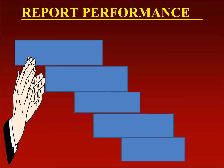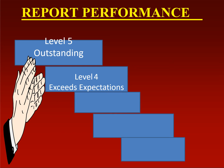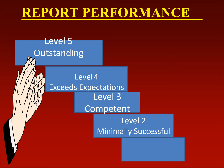The final product of the performance appraisal process is the performance evaluation report. It falls under five levels: Level 5 is outstanding performance; Level 4 is exceeds expectations; Level 3 is competent performance; Level 2 is minimally successful; and the base level is unsatisfactory performance. With this evaluation report, the performance appraisal process is completed.